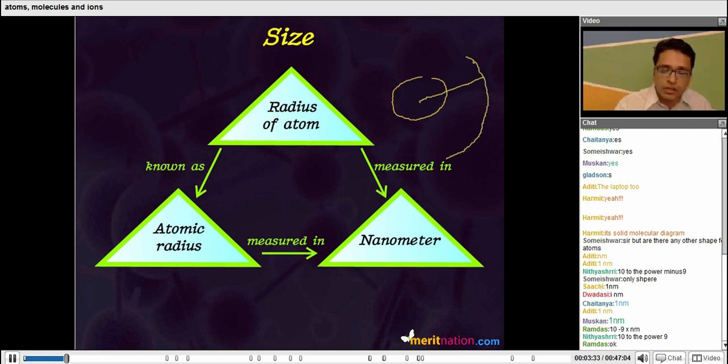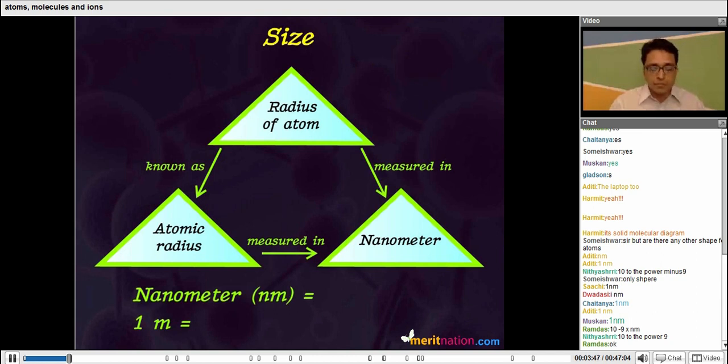All right, and this radius is supposed to be very small, so it is in the range of nanometers. Now can somebody tell me what one nanometer is equal to?